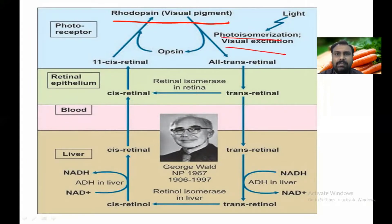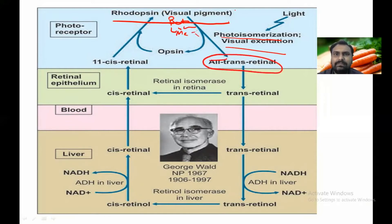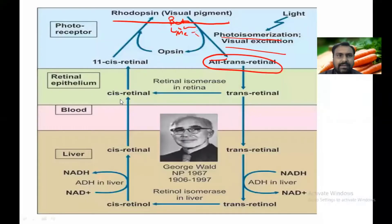Ultimately this rhodopsin is converted to bathorhodopsin, lumirhodopsin, metarhodopsin 1, 2, and ultimately it is converted to 11-trans retinal. Just remember: rhodopsin is made up of 11-cis retinal and opsin.